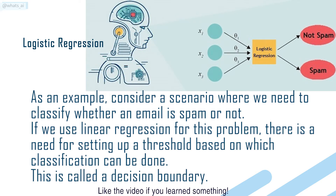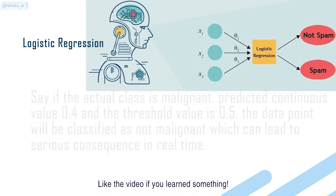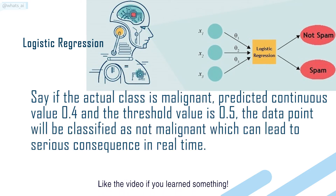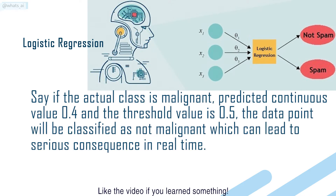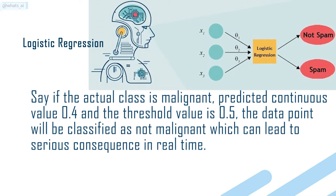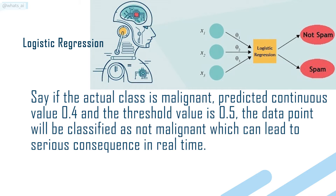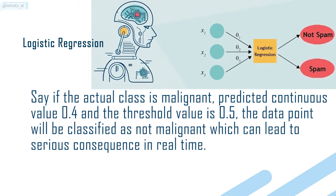This is called a decision boundary. Say if the actual class is malignant, the predicted continuous value is 0.4 and the threshold value is 0.5 — the data point will be classified as not malignant, which can lead to serious consequences in real time.